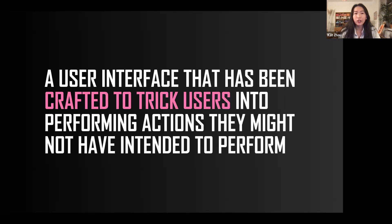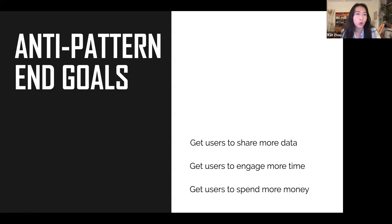One thing I really want to highlight is the word 'crafted.' It is very rare to have an anti-pattern that is a mistake. Generally speaking, anti-patterns involve a lot of thought and deliberation — it takes considerable thought to make a user do something they might not want to do. The end goals for those who employ anti-patterns are to get users to share more data, engage more time on the product, and spend more money. One could argue that data and time are themselves forms of money for our users.